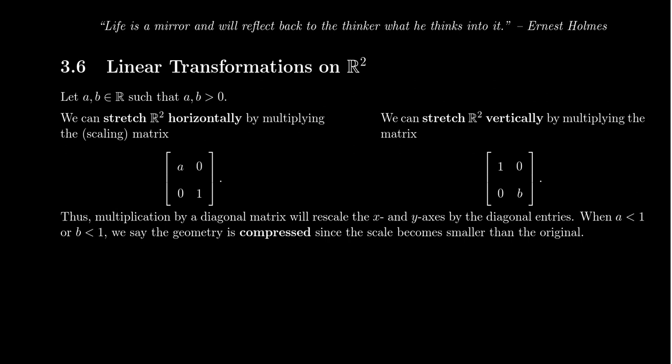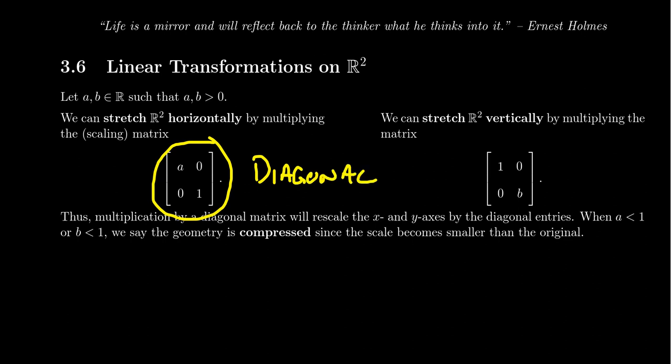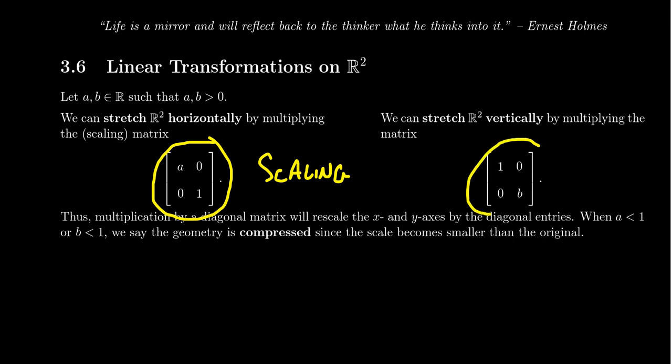The first type of geometric transformation we can see in R2 is going to coincide with what we call a stretch or a compression, or if we want to remain neutral, we could call it a scaling. So suppose we have two real numbers A and B, and the only stipulation is that they're going to be positive. The negative case will be taken care of in a later video. If we consider the 2x2 matrix A, 0, 0, 1, this is an example of a diagonal matrix. Because we have a 1 in the (2,2) position, this is an example of a scaling elementary matrix.